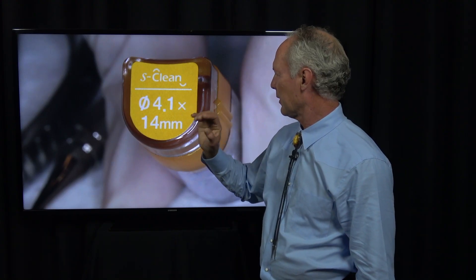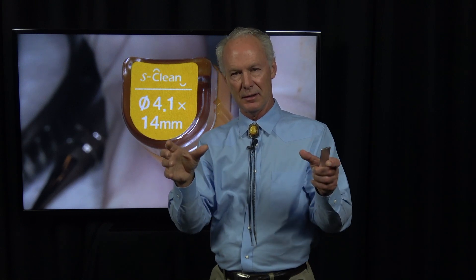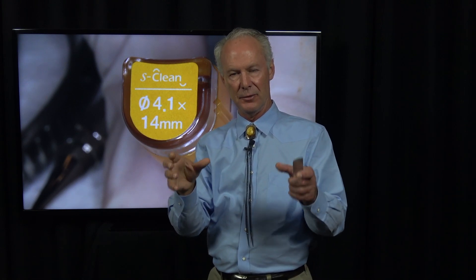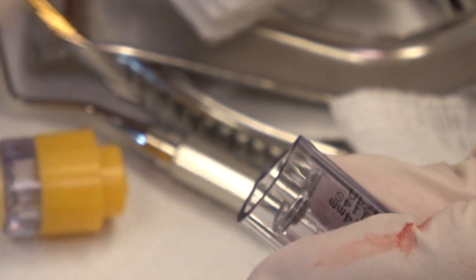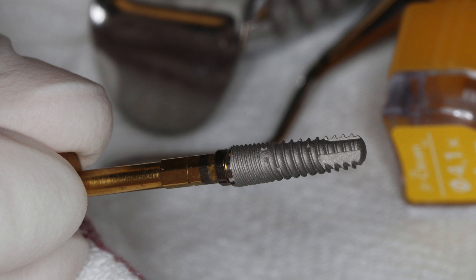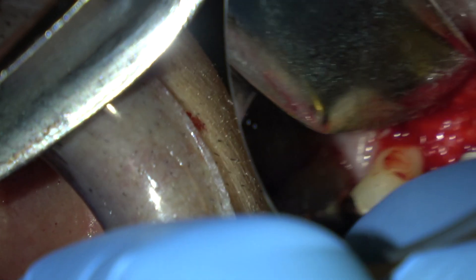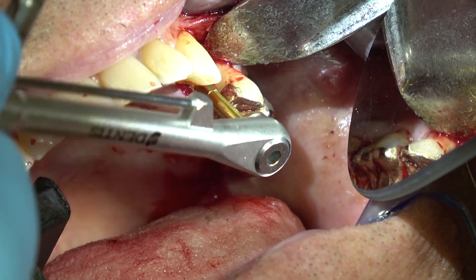How do you decide what width of implant to use? You want at least a millimeter of bone all the way around the implant. Look at the drill when it's in the osteotomy and ensure there's at least a millimeter of bone around it. If not, either don't go that wide or graft the buccal side. This is a 4.1mm.